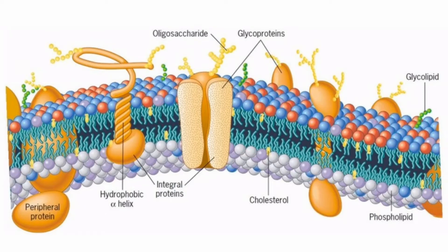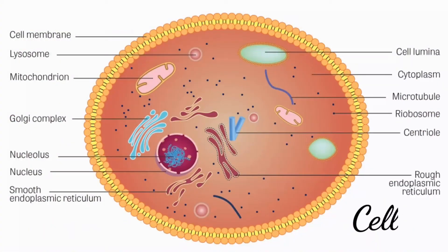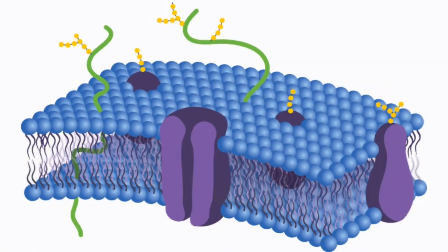Today we'll explore the fluid mosaic model of cell membranes. What does the fluid mosaic model even mean? First, we should clarify where exactly the cell membrane is. The cell membrane is the outer surface or protective layer of the cell which separates the cell from its external environment. In the fluid mosaic model, we're looking at the membrane through a cross-section of its surface. Underneath the membrane is the interior of the cell, also known as the cytoplasm, while above the membrane is the external environment. This model allows us to take a closer look at what a cellular membrane is made of and what properties it has.